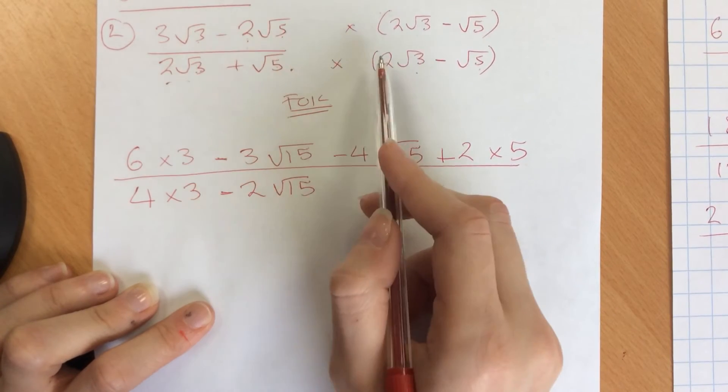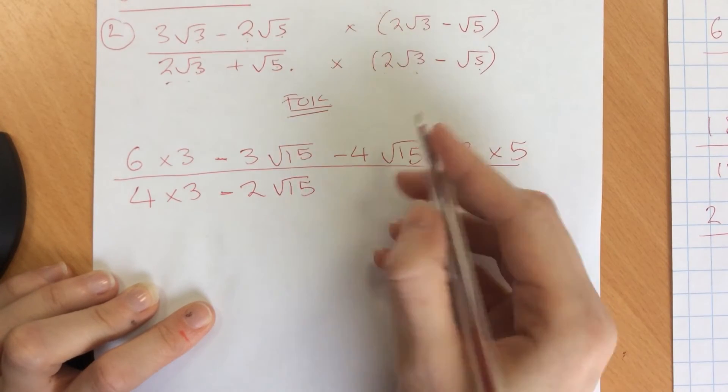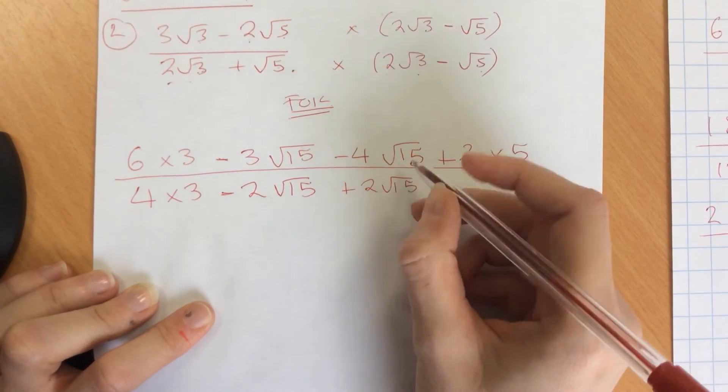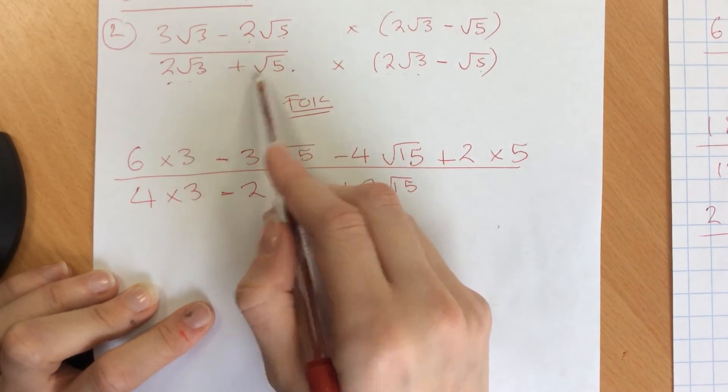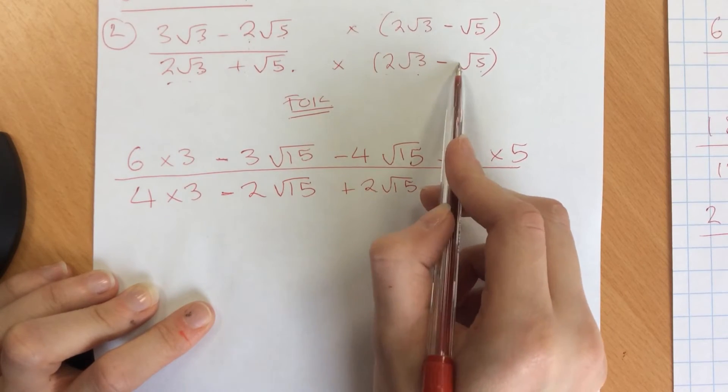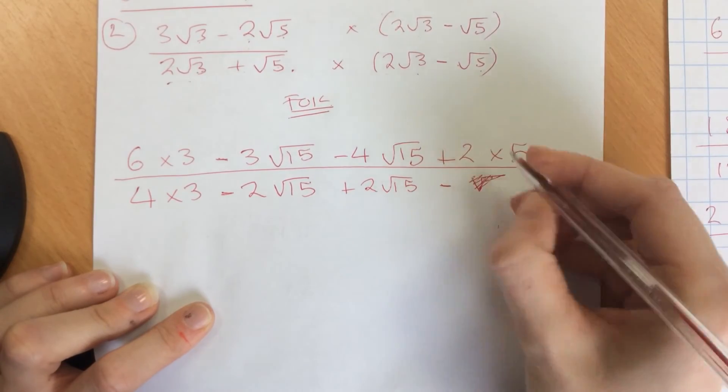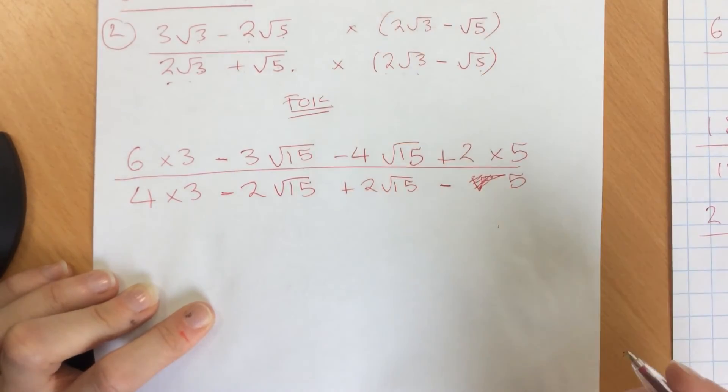Inside, plus root 5 times 2 root 3 gives me plus 2 root 15. Then we've got plus root 5 times minus root 5 gives me a minus. Root 5 times root 5 just gives me 5 at the end there.